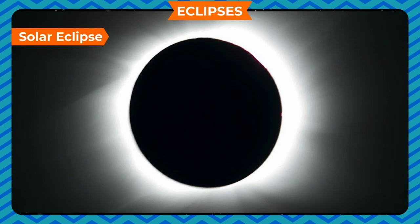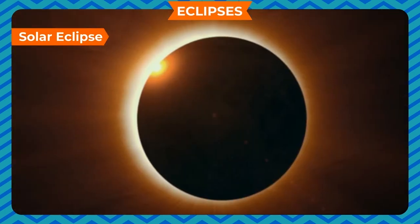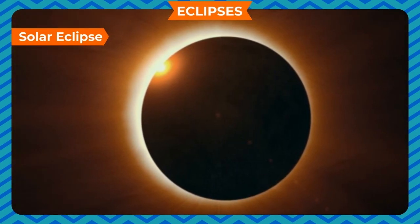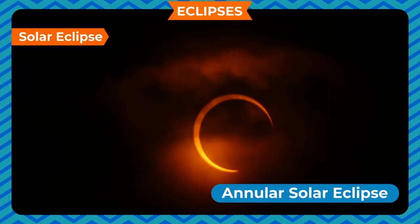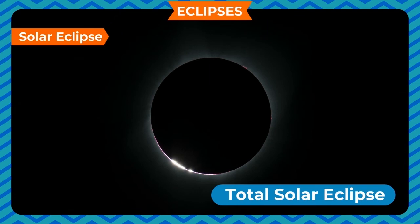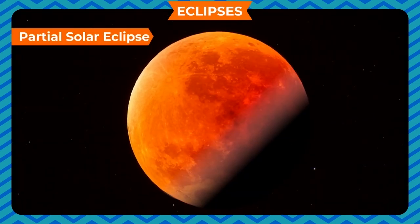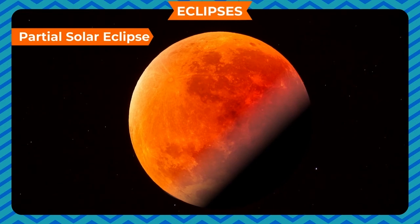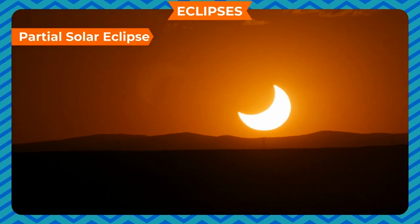During a solar eclipse, the dark side of the moon faces the earth; thus solar eclipse takes place only on a new moon day. There are three types of solar eclipse. Partial solar eclipse — when the moon does not line up the sun completely, it partially blocks the sunlight from reaching the earth. This is called a partial solar eclipse.